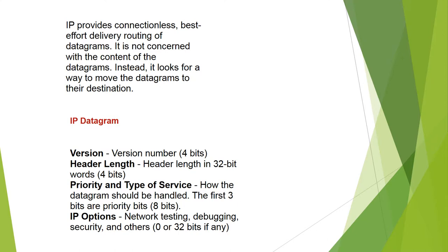IP provides connectionless, best-effort delivery routing of datagrams. It is not concerned with the content of the datagram; instead, it looks for a way to move the datagram to its destination. The IP datagram fields include: version number (4 bits), header length in 32-bit words (4 bits), priority and type of service — how the datagram should be handled, with the first 3 bits being priority bits (8 bits total) — and IP options for network testing, debugging, security, and other uses (0 or 32 bits if any).